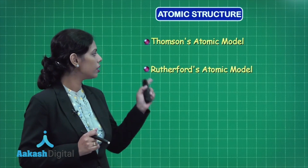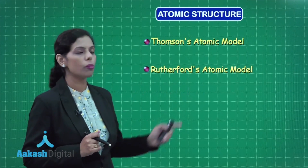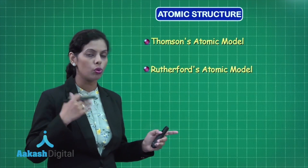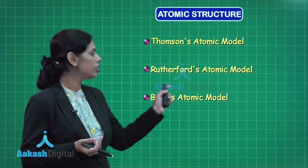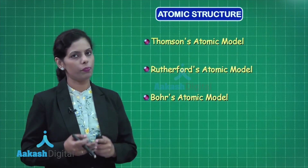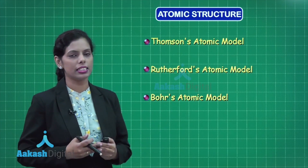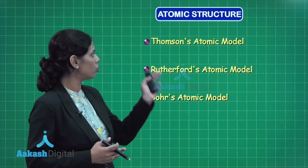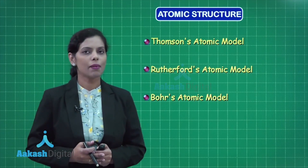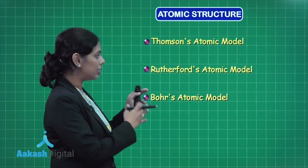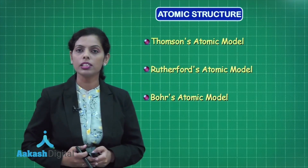The next one is Rutherford's atomic model, which is more advanced than Thomson's. And then Bohr's atomic model, which is more advanced as compared to Rutherford and Thomson. In this chapter, we will discuss these atomic models.